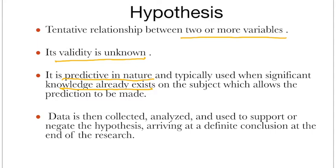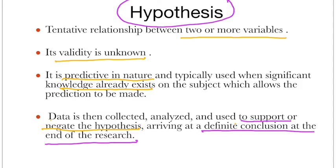Once we go for this, we collect data, analyze it, and use it to support or negate the hypothesis. Once we go for the statistical analysis, either we support the hypothesis we framed or we negate it. Based on that, we give a definite conclusion at the end of the research. We can say that hypothesis is the base on which our research lies. Once we go through the subsequent steps, we accept or cannot accept the hypothesis, and on that basis, we give conclusions and inferences.